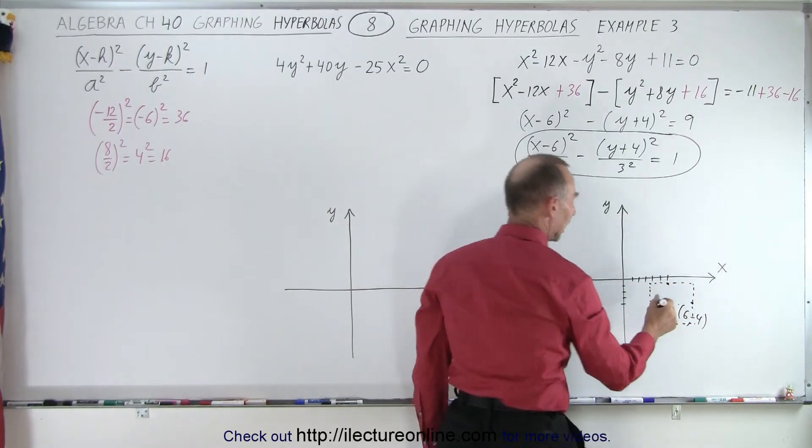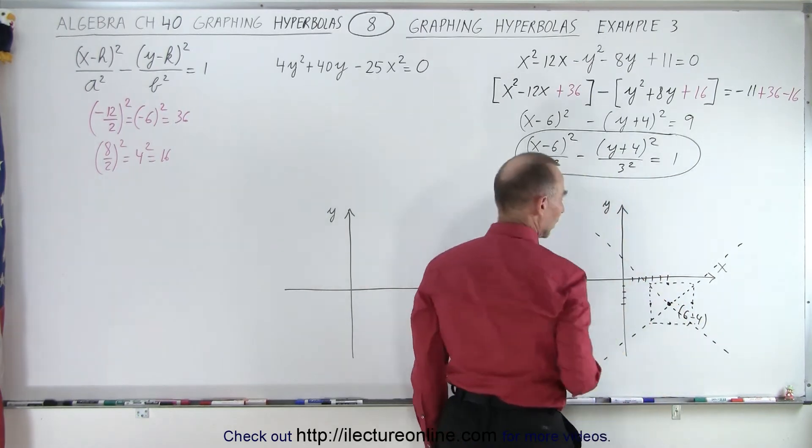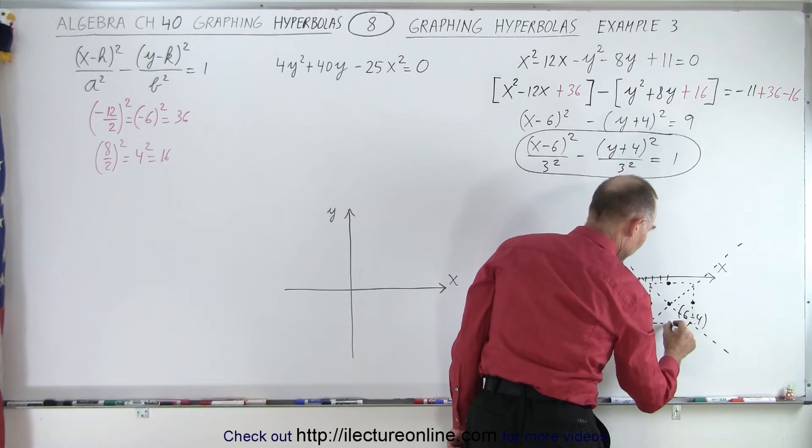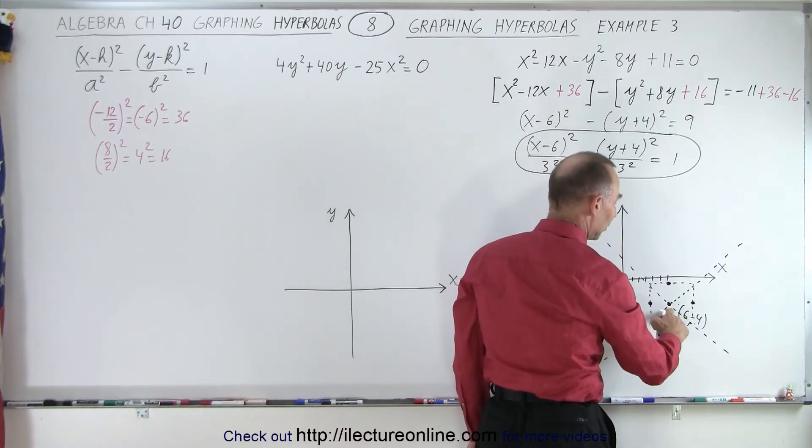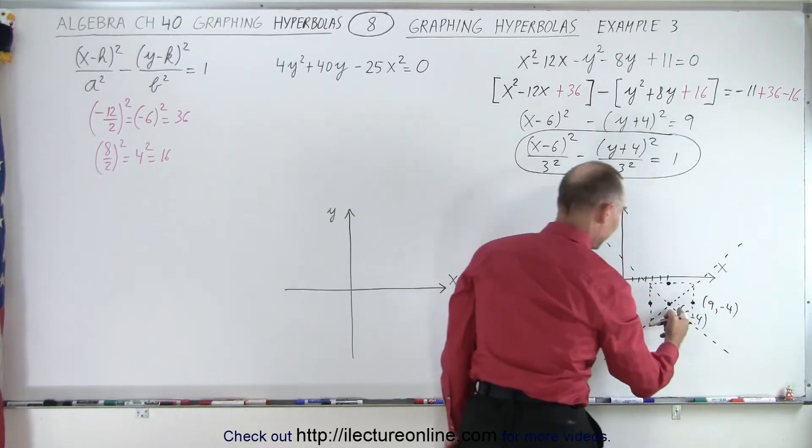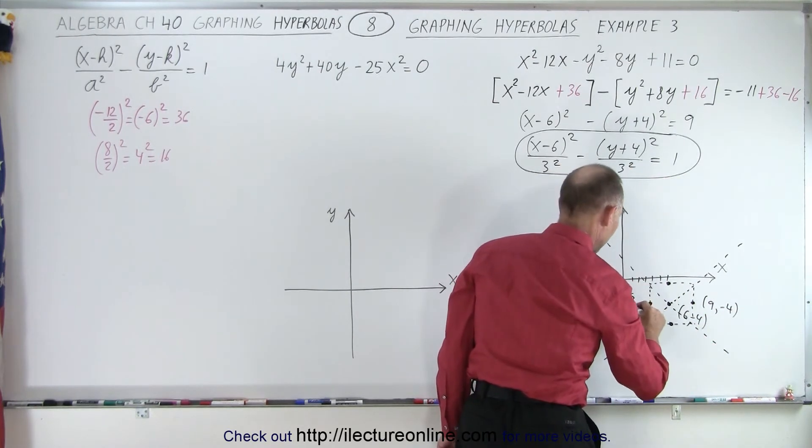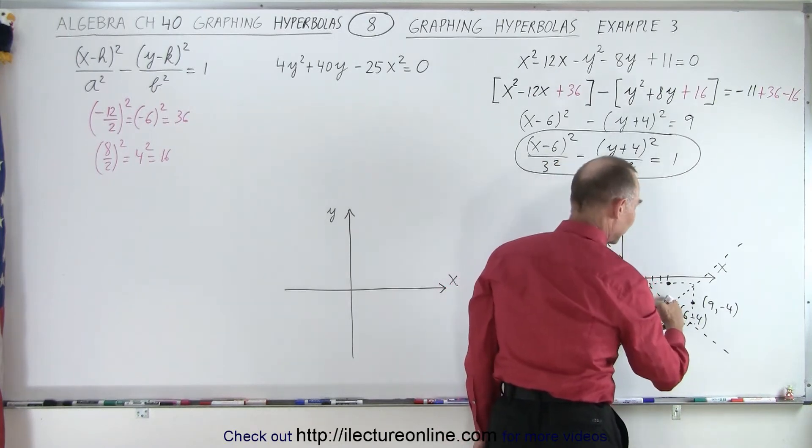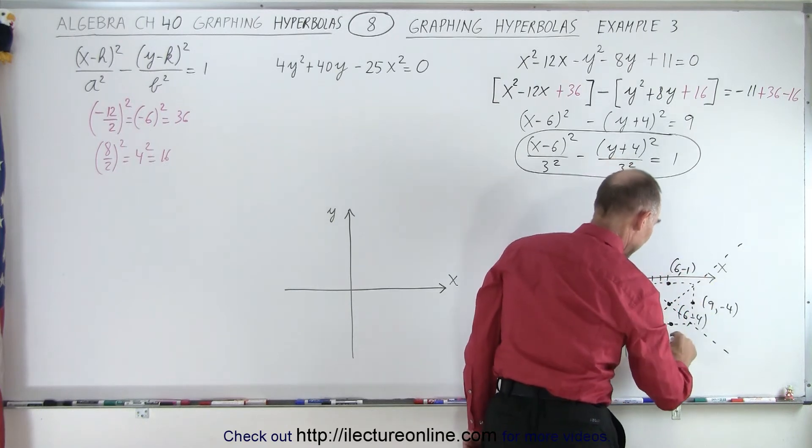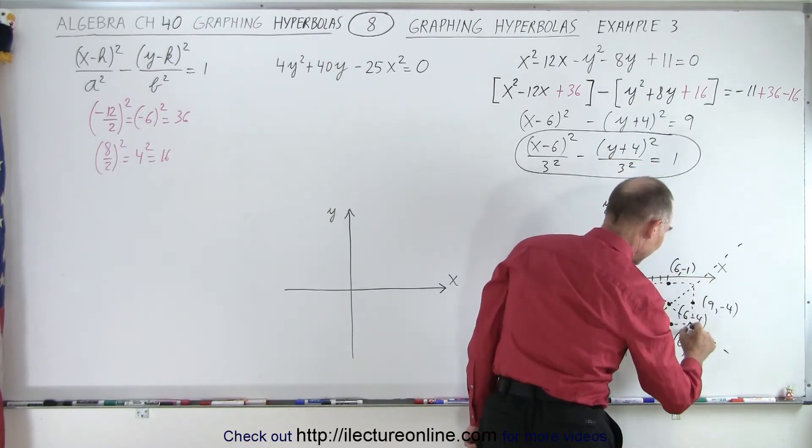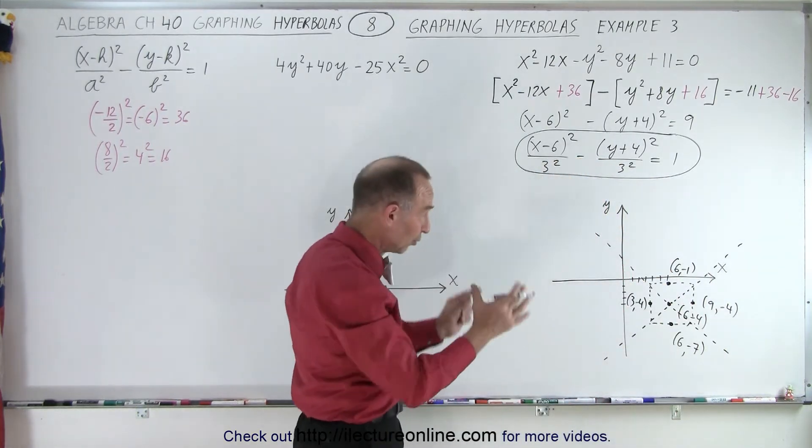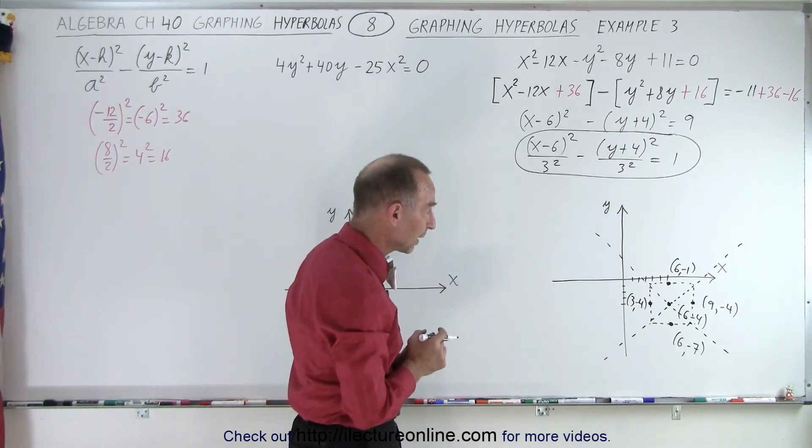Now we need the diagonal lines. If you want to know where these points are, which is not a bad idea to write those down. So here we have 9 and negative 4. Here we have 3 and negative 4. Here we have 6 and negative 1. And here we have 6 and negative 7. So those are the coordinates of the four points that determine the size of the box.